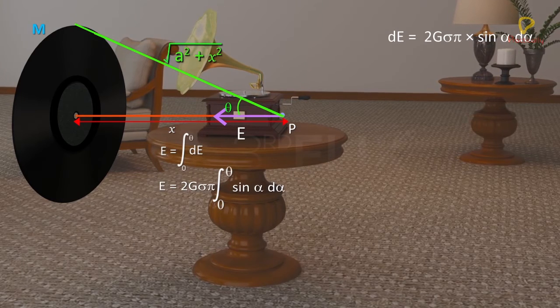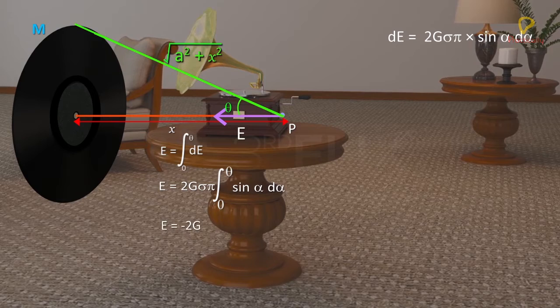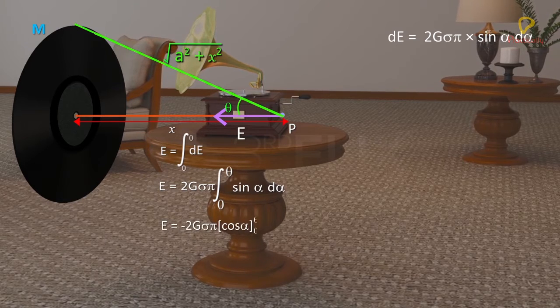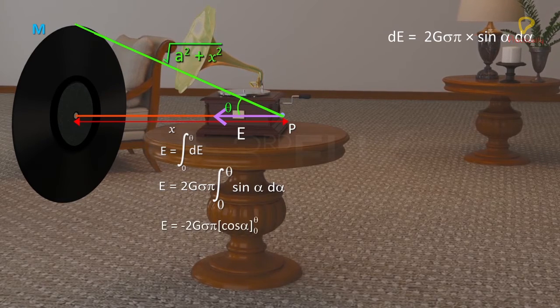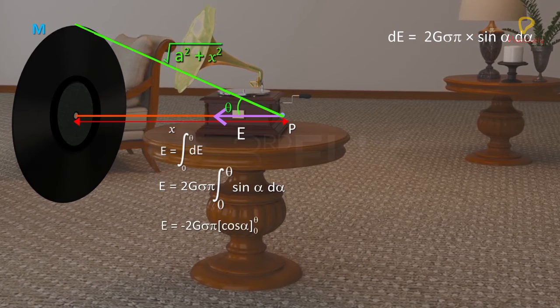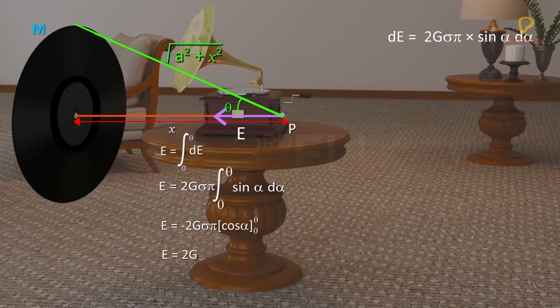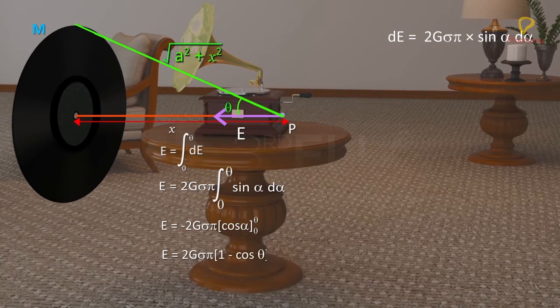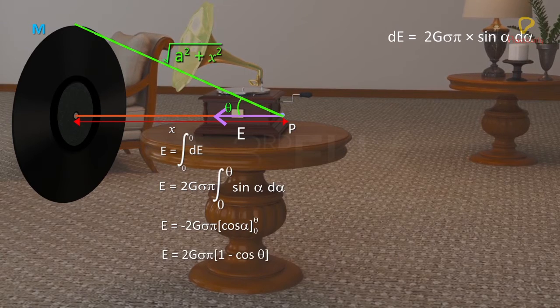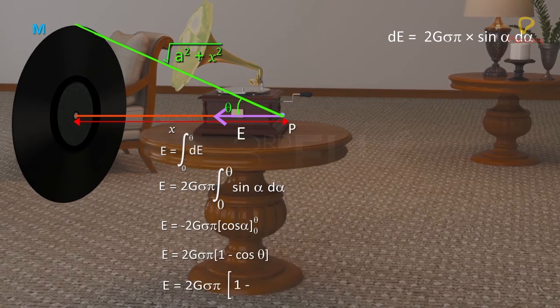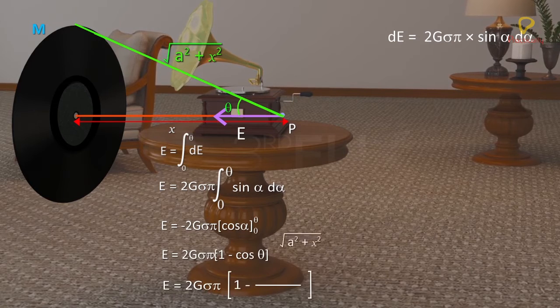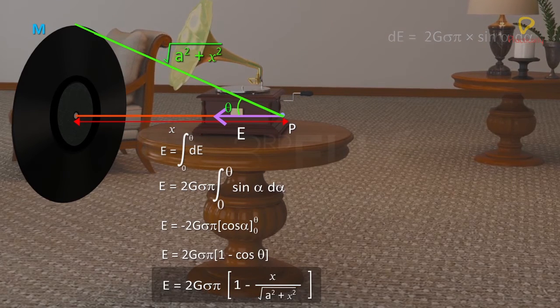Upon integration, E equals minus 2G sigma π cos alpha from 0 to theta. On substituting the limits, E equals 2G sigma π (1 minus cos theta). Therefore, E equals 2G sigma π [1 minus X by square root (A squared plus X squared)].